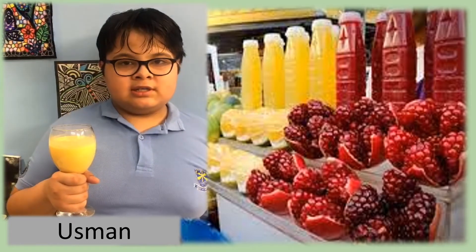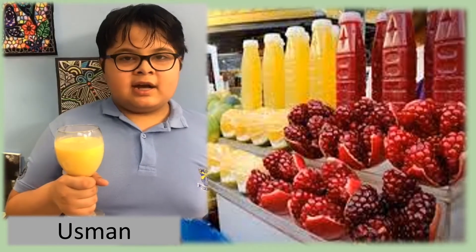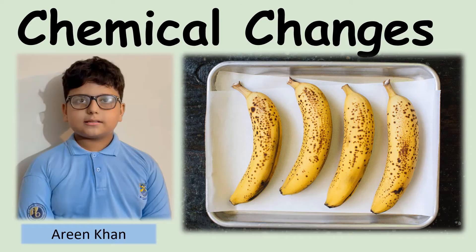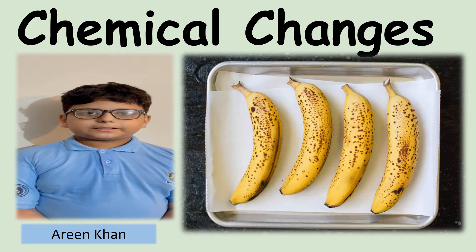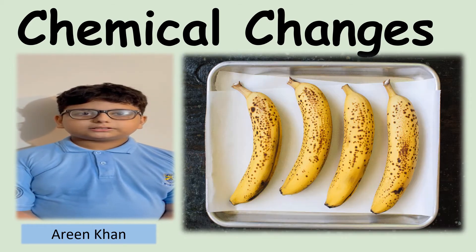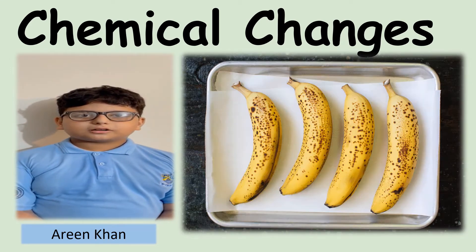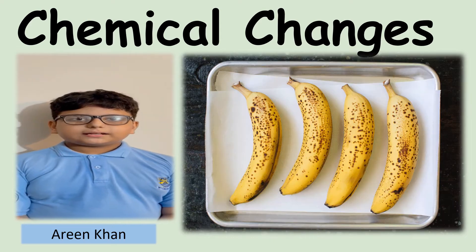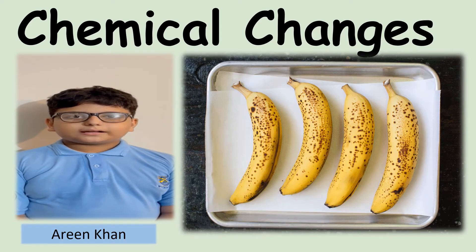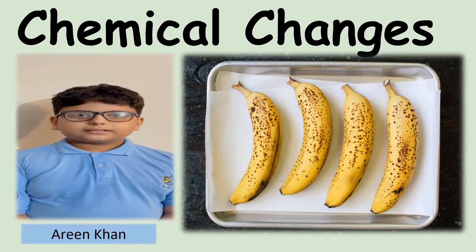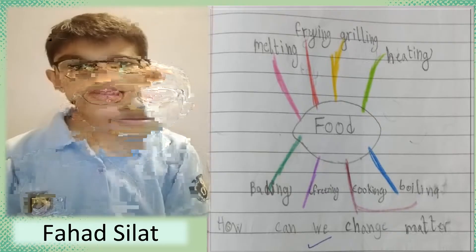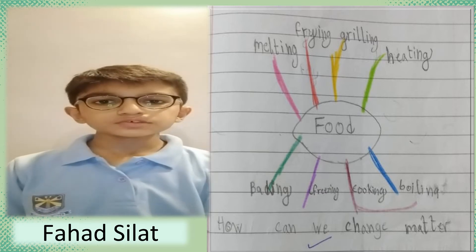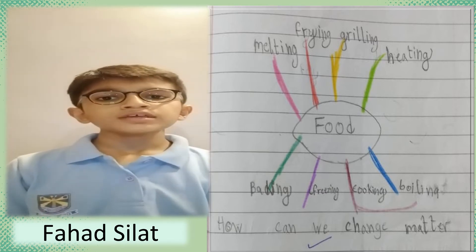When we blend mangoes to make a glass of smoothie, this is a physical change as no new substance is formed. Mango smoothie is now a form of liquid made through a solid. In some cases, chemical changes take place naturally — like a rotten banana or stale food. We can tell the change by its color, odor, and texture. This cannot be reversed.